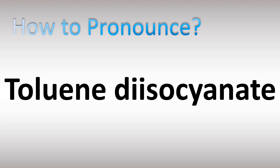How do you pronounce the name of this chemical compound? Let's break down the pronunciation and learn more names from chemistry and science. Toluene — stress on the first syllable — toluene diisocyanate. Did you get this? Toluene diisocyanate.